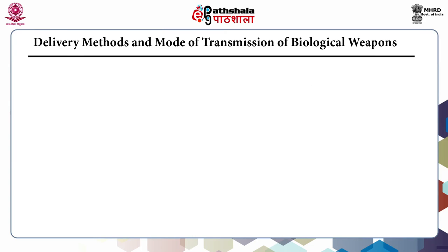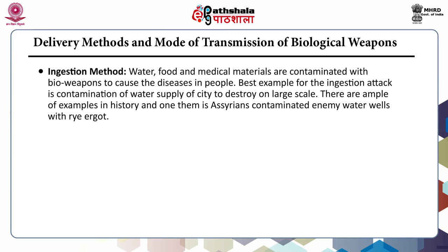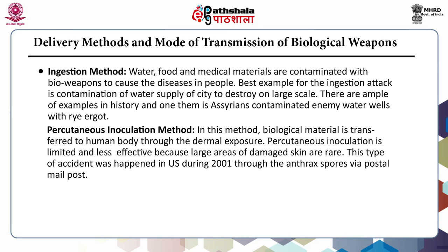Another method is ingestion: water, food, and medical materials are contaminated with biological weapons to cause disease in people. The best example is contamination of a city's water supply for large-scale destruction. One historical example is the Assyrians contaminating enemy water wells with rye ergot. Then, percutaneous inoculation: biological material is transferred to the human body through dermal exposure, but this is limited and less effective because large areas of damaged skin are rare.